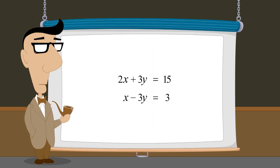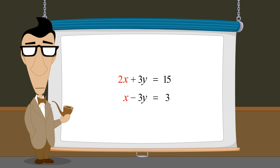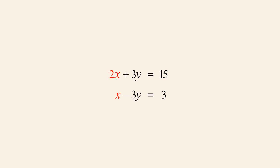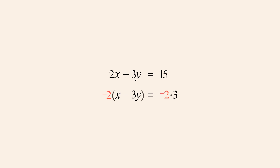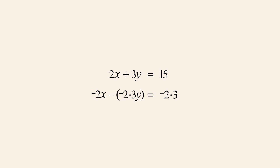Starting with this same system of equations, instead of eliminating the variable y, we could have eliminated x. Simply adding these equations will not eliminate the variable x, since the x-terms don't cancel. However, we can rewrite the second equation to make the x-terms cancel by multiplying both sides by negative 2. Distributing the negative 2 multiplier to the terms in parentheses, we get negative 2x minus negative 2 times 3y, which we can write more simply as plus 6y. This is equal to negative 2 times 3, or negative 6.